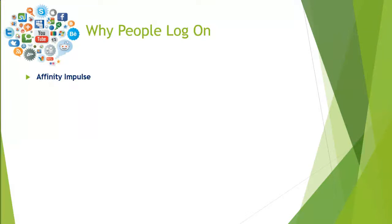The first is an affinity impulse. Affinity means a liking. The affinity impulse refers to the idea that social media platforms enable their participants to acknowledge their relationships with other individuals and groups. In other words, people like staying in touch with old friends and new friends, and they can do that online. It's that liking — that idea to connect.